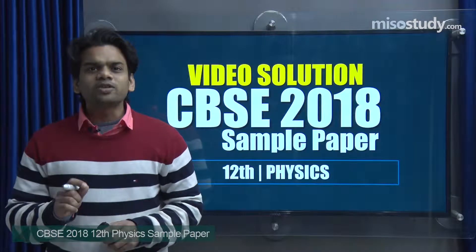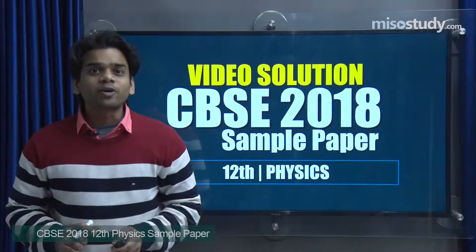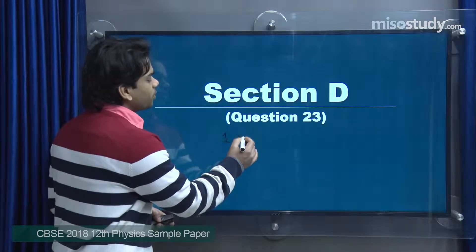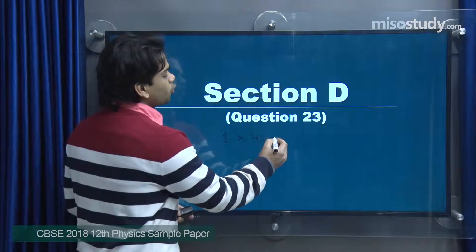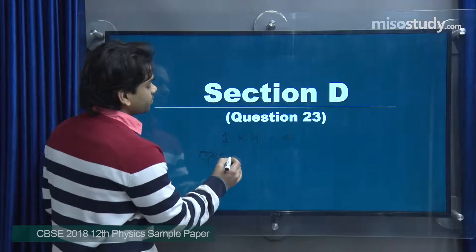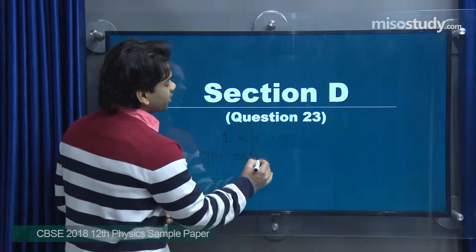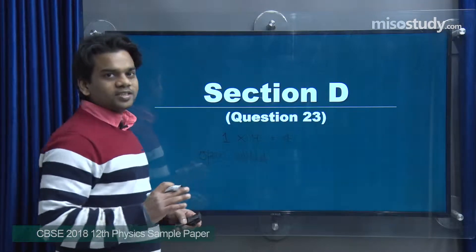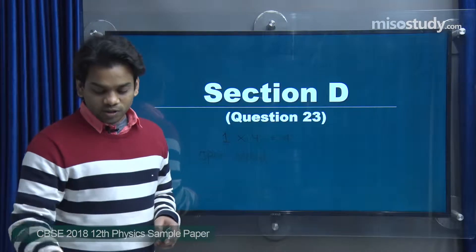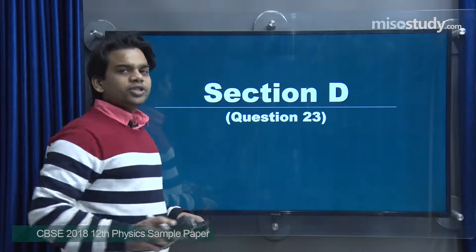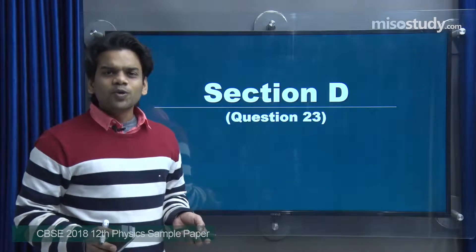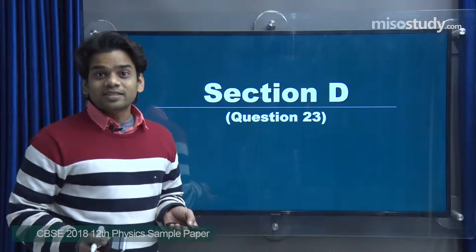Section D will comprise only one question, which is an open-ended question worth four marks. This is an open-ended question, meaning there is no single definite right or wrong answer. If you try to give a perfect answer, you will get full marks. A statement or paragraph will be given — a scenario — and you have to comment on that given scenario.